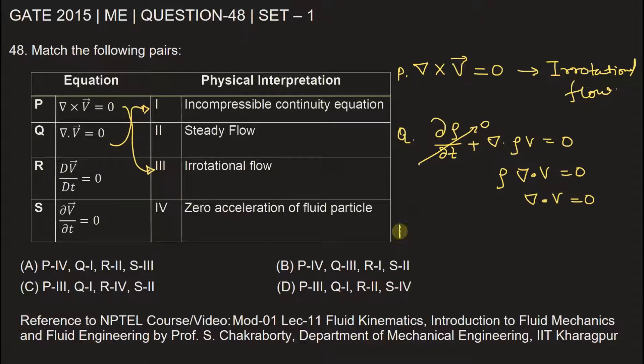Now R is DV vector by Dt. This is a total derivative, which can be written as ∂V/∂t plus V dot del V. This is equal to zero, which represents the acceleration of fluid particles, which is equal to zero. So this is the local acceleration or temporal acceleration, and this is the convective acceleration of fluid particle. So R will match with four.